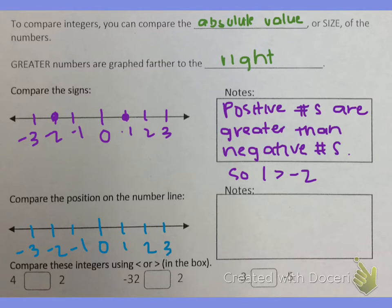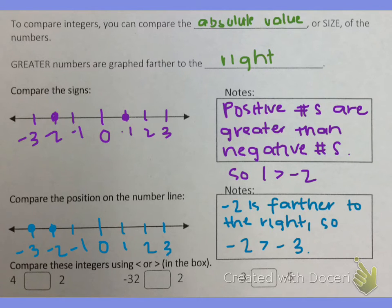Another way that we can compare integers is to compare the position on the number line. Let's take a look at negative 2 and negative 3. We talked about how greater numbers are graphed farther to the right. Negative 2 is farther to the right so that means negative 2 is greater than negative 3. So these last three problems you need to do on your own and we will check them together in class.